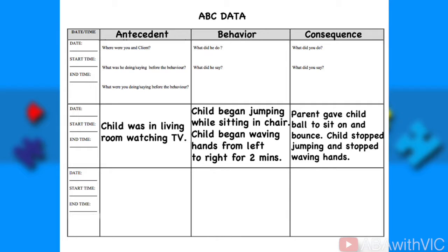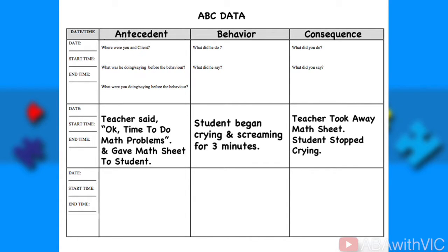Here's another example. The antecedent was the teacher saying 'okay, time to do math problems' and giving a math sheet to the student. The behavior was the student crying and screaming for three minutes. The consequence was the teacher taking away the math sheet, after which the student stopped crying. The function of this behavior is escape, because the student was crying when given a demand and stopped when the demand was removed.